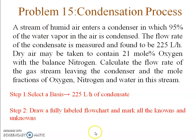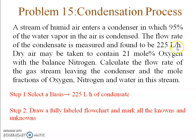Now let's work through a problem. A stream of humid air enters a condenser in which 95% of the water vapor is condensed. The condensate flow rate is 225 liters per hour. The dry air component contains 21 mole percent oxygen and 79 mole percent nitrogen. The problem asks us to calculate the flow rate of the gas stream leaving the condenser and the mole fractions of O2, N2, and water. The basis is 225 liters per hour of condensate.